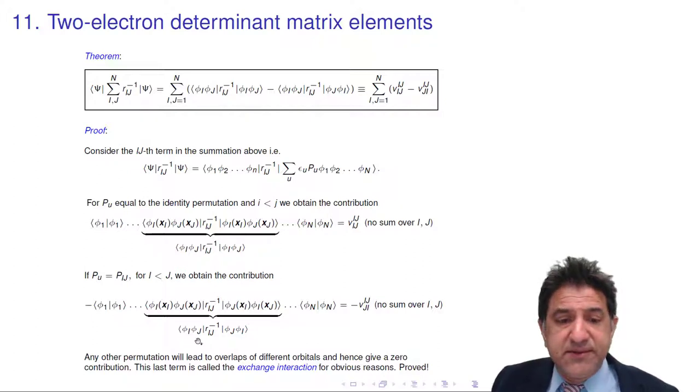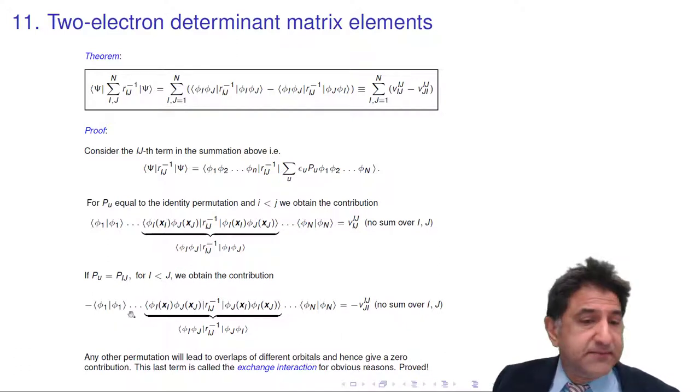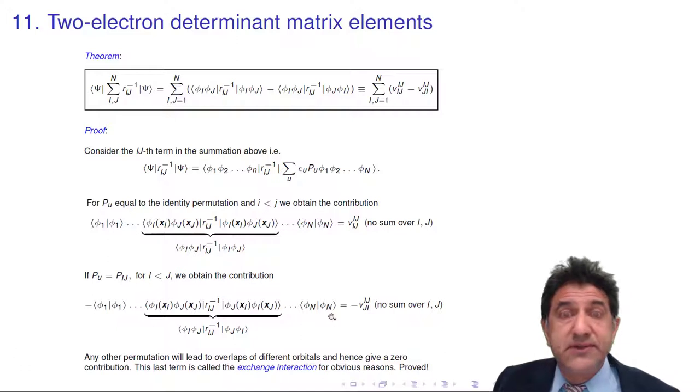So this is the second term, phi i, phi j. And that's fine. We get that. This is not zero. There are no mismatches. So with a two-electron operator, we finally get a result when the two electrons are swapped, which is not zero. It's phi i j superscript j i subscript minus 1. No sum.